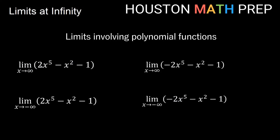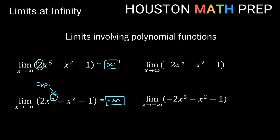For an odd degree example, take 2x to the 5th minus x squared plus 1. As x approaches infinity, the lead coefficient is positive 2, so this limit is positive infinite. As x approaches negative infinity, the odd power means opposite behavior — so this tends toward negative infinity. If instead the lead term is negative 2x to the 5th, then as x approaches infinity the limit is negative infinity, and since it's odd degree, as x approaches negative infinity the limit is the opposite — positive infinity.